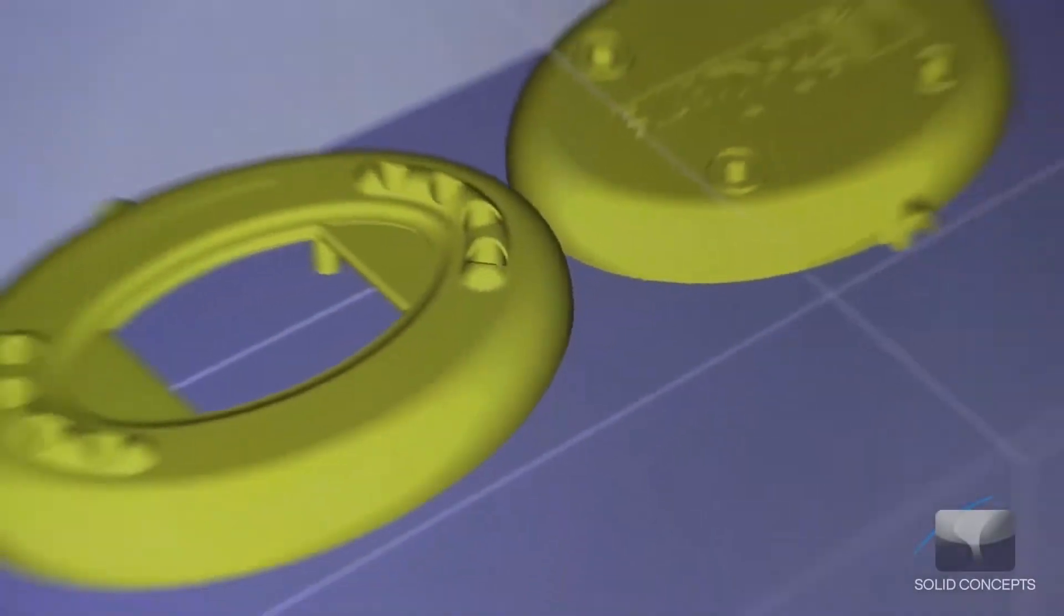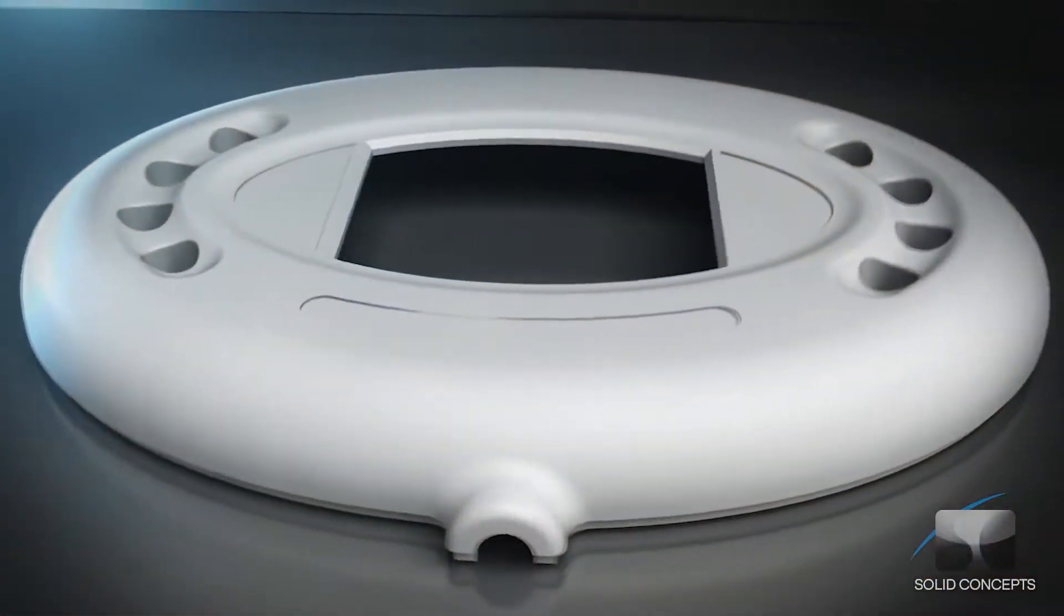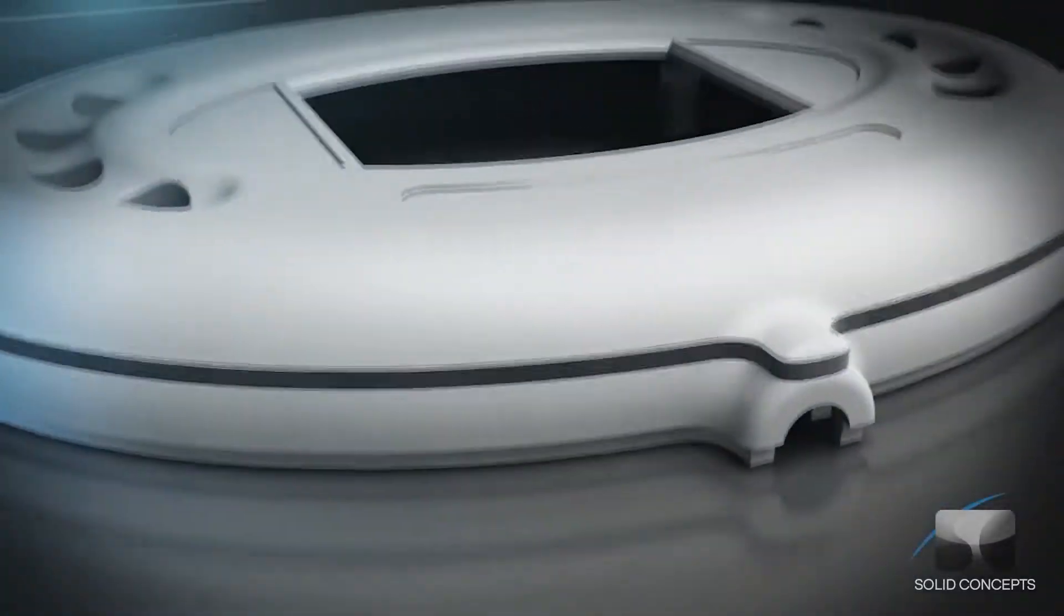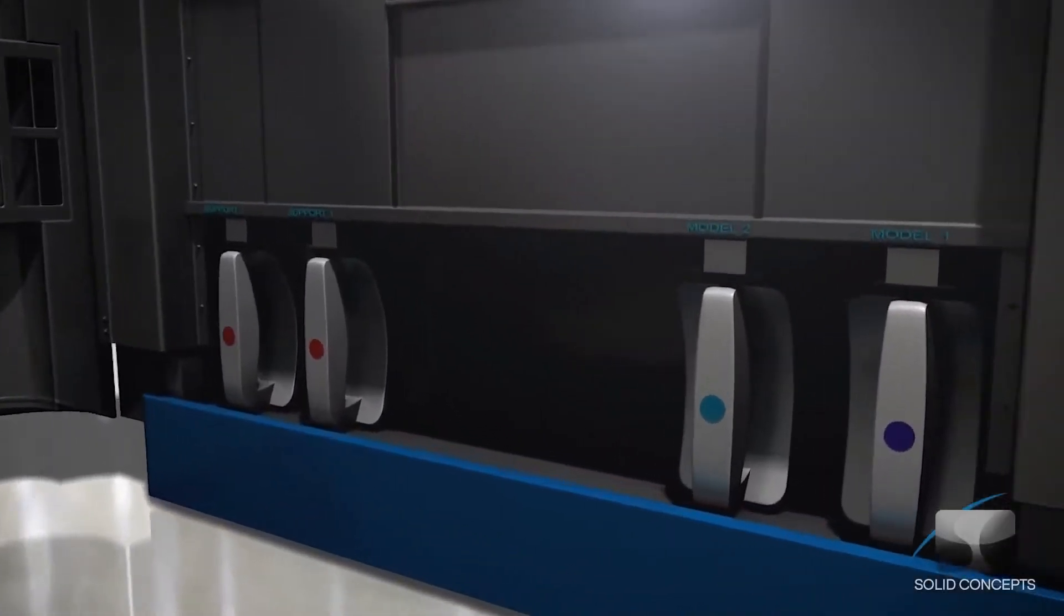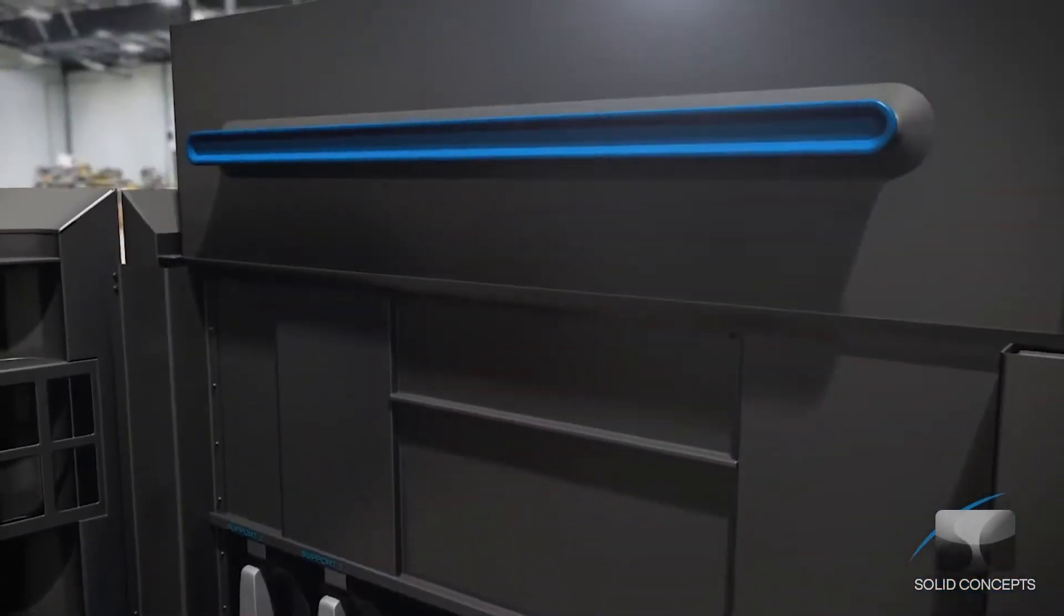The PolyJet process begins by slicing CAD data into cross-sections or layers as thin as 6-10 thousandths of an inch. The data is then transferred to the PolyJet machine, which begins constructing the object one layer at a time.